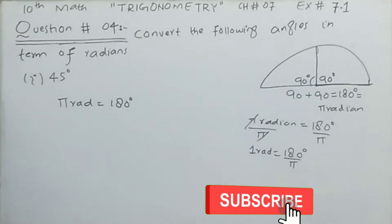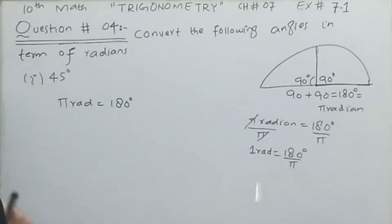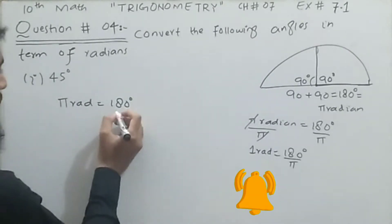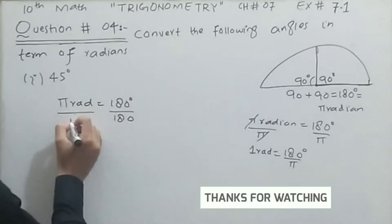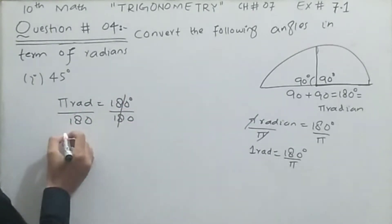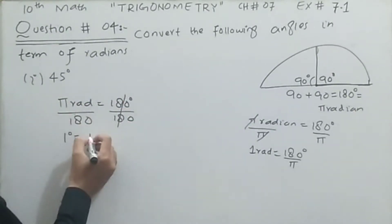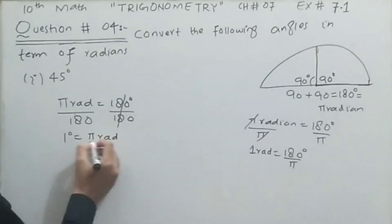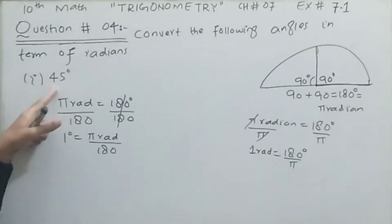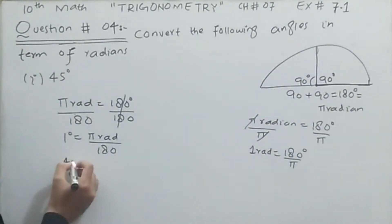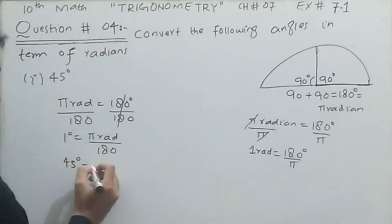To find the value of 45 degrees in terms of radians, first I will find one degree from this equation by dividing both sides by 180. So we are left with one degree is equal to π radian divided by 180. Now in the given question we have 45 degrees, so I will multiply 45 to both sides.